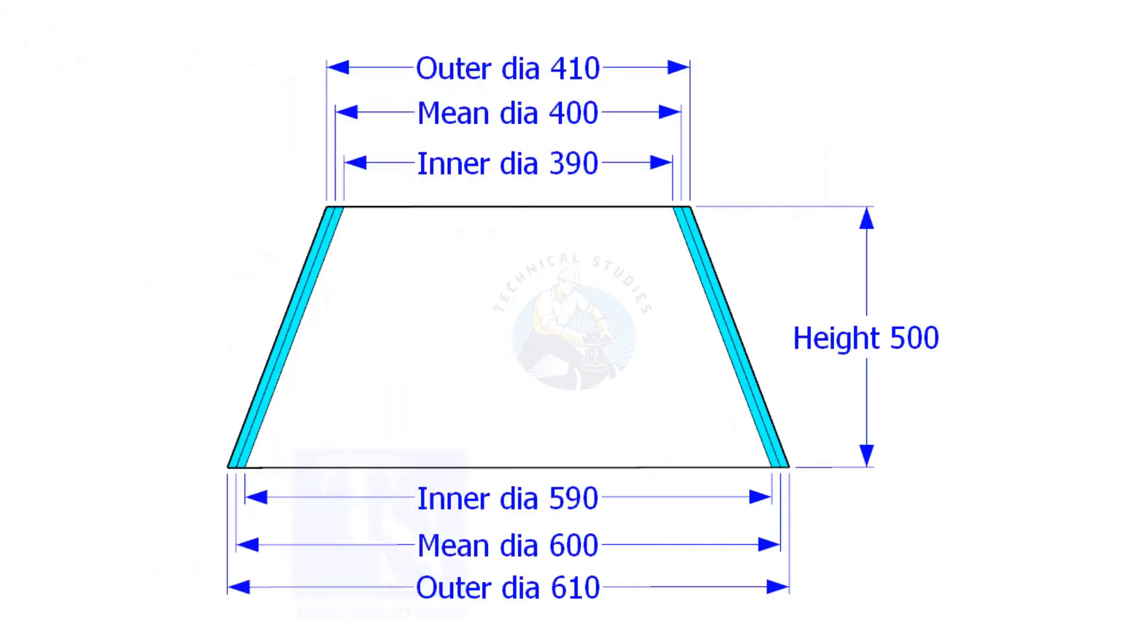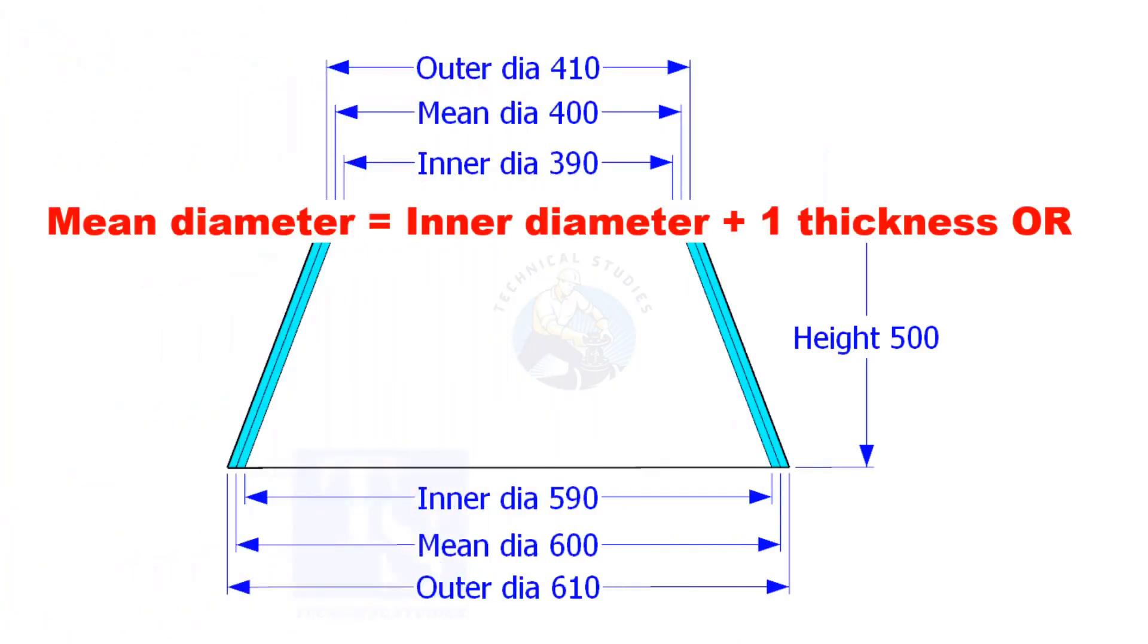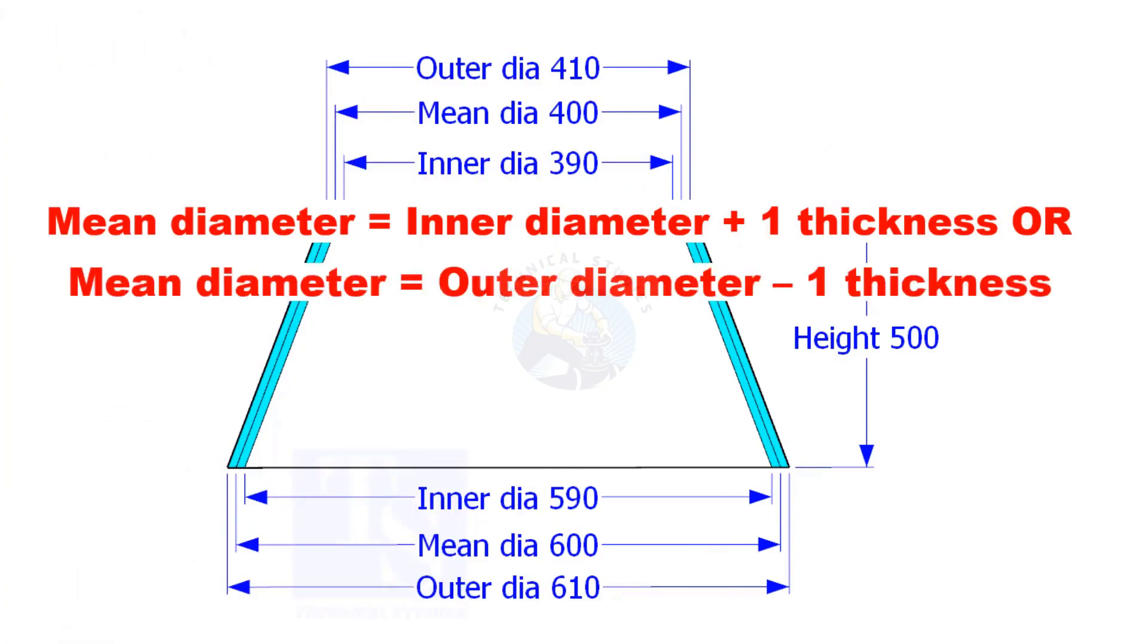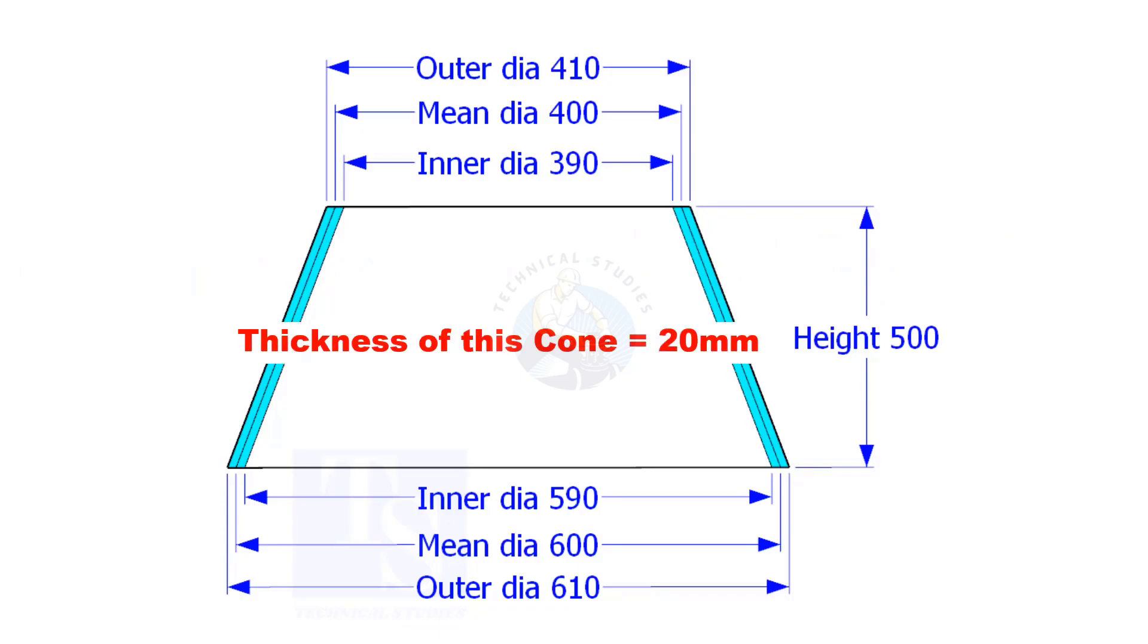Look at the cross section of the cone. What is the mean diameter? It is the center diameter of a circle or a sphere. For example, suppose the inner diameter is 1000mm and the thickness of the cone is 20mm, then the mean diameter shall be 1000 plus 20, equal to 1020mm.